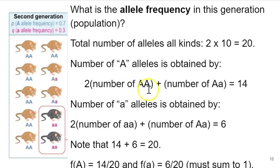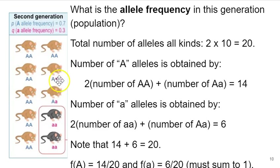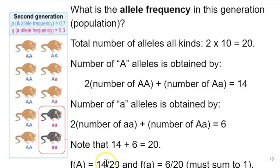The number of big A alleles can be obtained more formulaically: two times the number of homozygous dominant organisms, plus one times the number of heterozygotes. Every mouse with genotype AA contributes two big A alleles; every heterozygote contributes one. That still gives 14 out of 20. Similarly, the number of little a alleles equals two times the number of homozygous recessive animals plus one times the number of heterozygotes, giving 6. So the frequency of big A is 14/20 and the frequency of little a is 6/20, and together they sum to one.